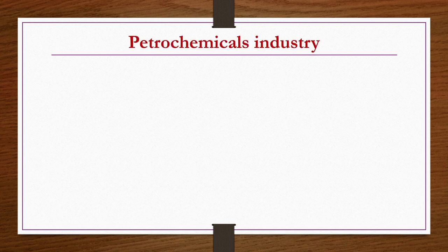Now we start discussing individual synthetic chemical industries. First, we talk about the petrochemicals industry — its definition, how it is derived, and then we get into the manufacturing of different types of petrochemicals.